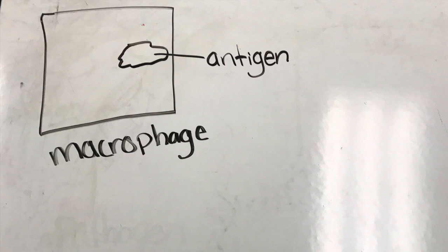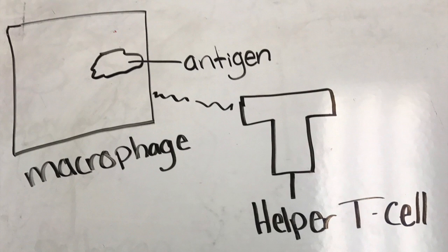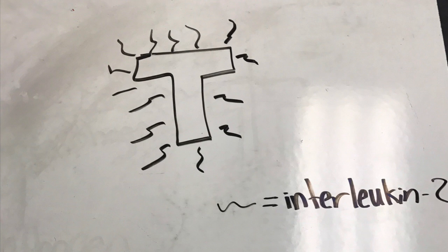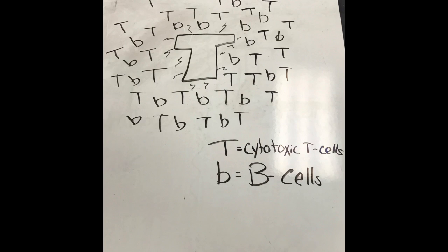An antigen-presenting macrophage interacts with the T-helper cell that can recognize the same antigen. During the interaction, the T-helper cells secrete interleukin-2, which causes the proliferation of certain cytotoxic T-cells and B-cells.